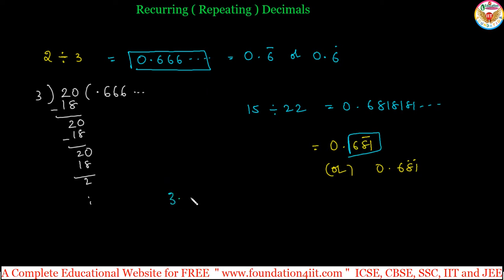Pure recurring decimal means after the decimal point, the complete decimal part should be repeated. And mixed recurring means after decimal, only some part is repeated. For example, 3.060606 is repeating. After the decimal, the complete decimal part is repeating, this is pure recurring decimal. Instead of that, 0.3.06 where only 6 repeats, 0 is not repeated, only 6. This is mixed recurring decimal.